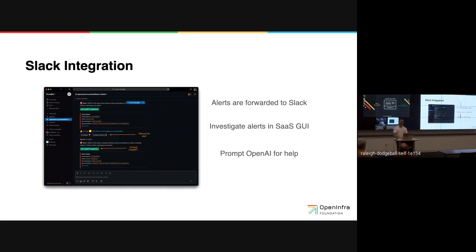At some point you'll just say, go ahead and remediate that, and it'll do it for you. With Robusta you can already remediate some simpler issues with runbooks — if a pod's going to crash if load goes above a threshold, scale it or something like that. If you think about integrating the AI data back with a runbook that says, this might be an issue, why don't we try to remediate with this automation — that could be our level-one support. If that doesn't work, now I need to put hands on the keyboard.